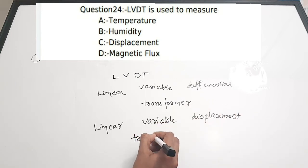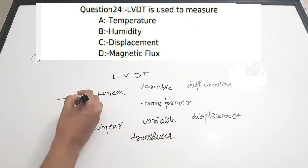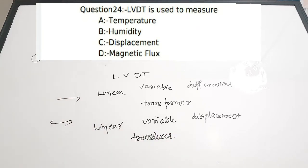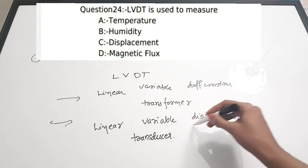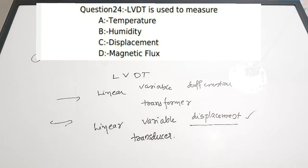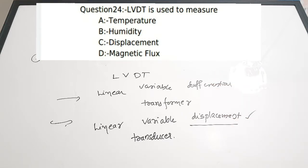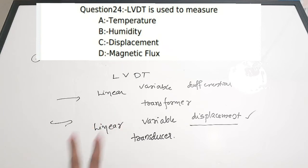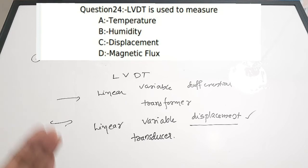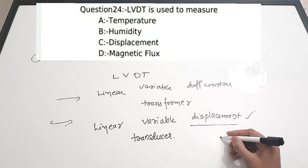LVDT can also be called Linear Variable Displacement Transducer. From this second expansion it is clear that it is used to measure displacement — specifically linear displacement. There is a separate video on LVDT in the electronics instrumentation measurement playlist for more detail. The correct answer is option C, displacement.